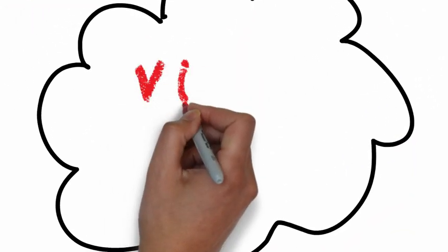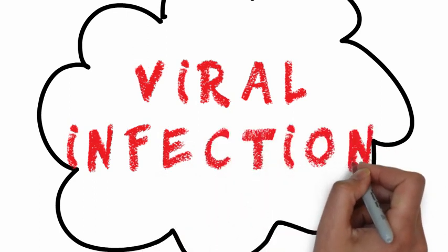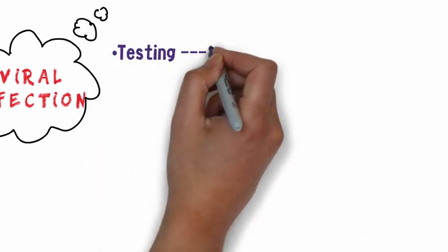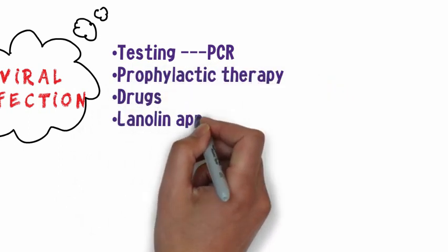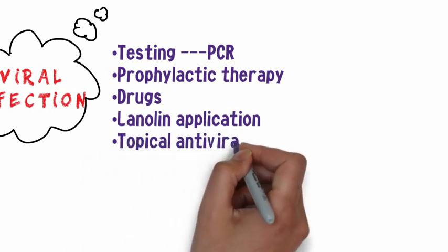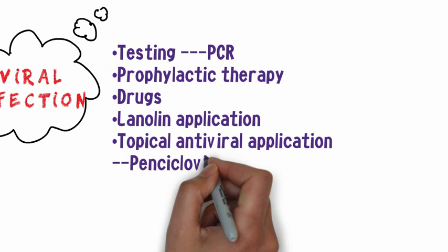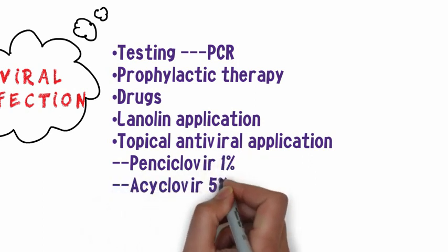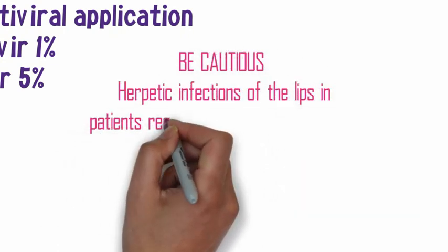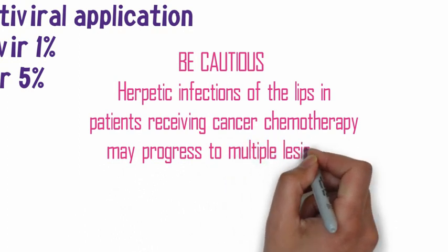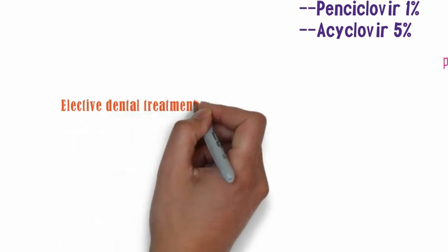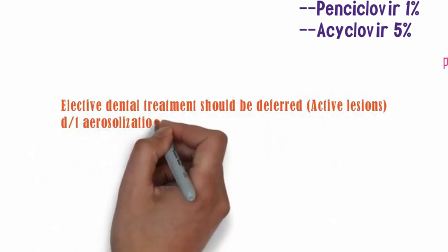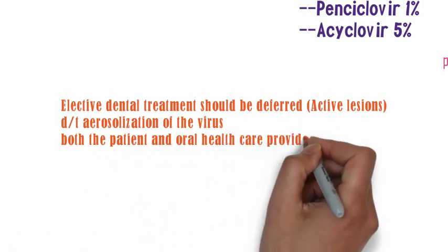For treatment of viral infections, the gold standard for testing is the polymerase chain reaction test, a revolutionary method developed by Dr. Mullis in the late 1980s. Antiviral drugs may also be useful. Lanolin, which is an emollient, is used topically for relief, and topical antiviral gels are applied over the lesions every two hours until the lesion heals. If any active lesion is present, elective dental treatment should be postponed, as aerosolization of the virus is a serious problem that puts both the patient and healthcare provider at risk.